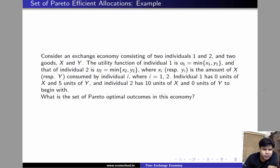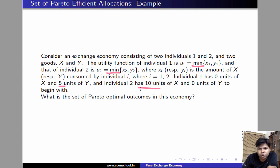Hi, welcome. In this video, we'll learn how to find a set of efficient allocations in an economy where individual 1's utility function is minimum x1y1, individual 2's utility function is minimum x2y2, individual 1 has only 5 units of y, and individual 2 has only 10 units of x. So the total amount of y in this economy is 5 units and the total amount of x is 10 units.